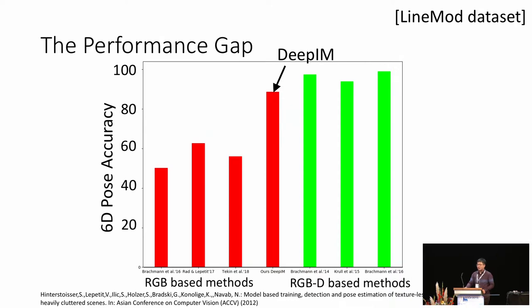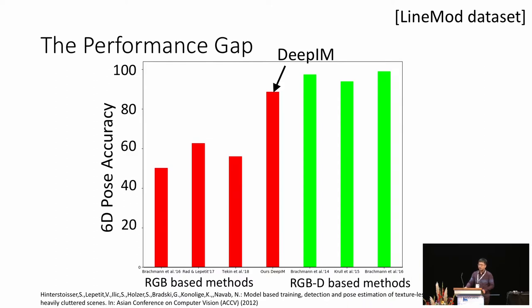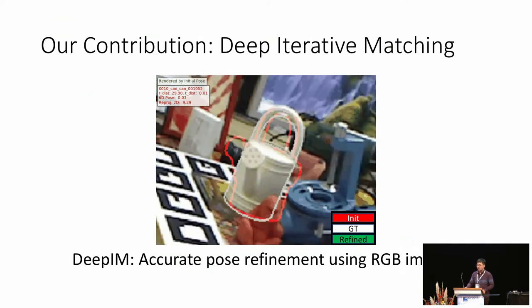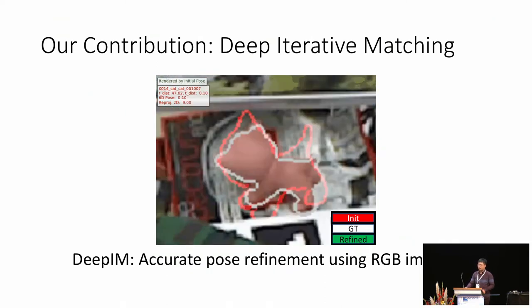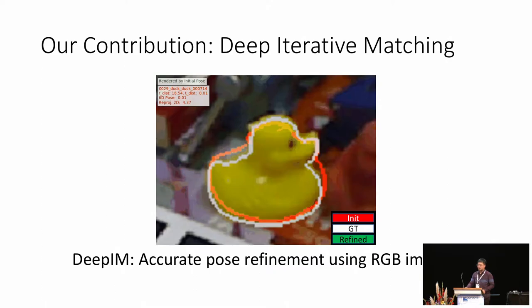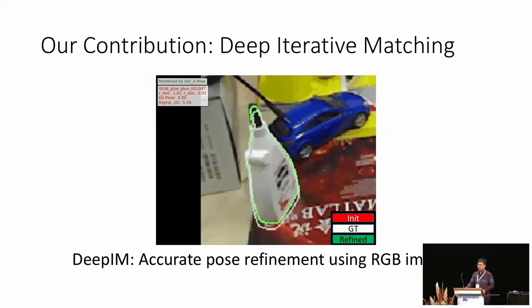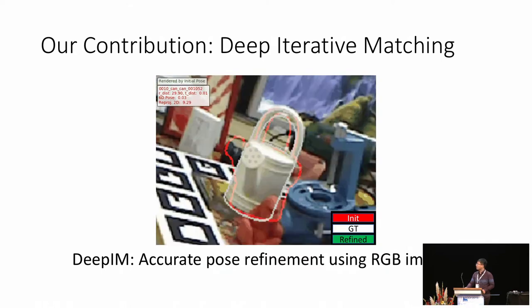When our method is used to refine pose estimates, we found the gap is greatly narrowed, and the RGB-based method is able to be competitive to those using depth images. Here we propose DeepIM, a neural network-based pose refinement technique, which iteratively refines 6D poses using only RGB images.